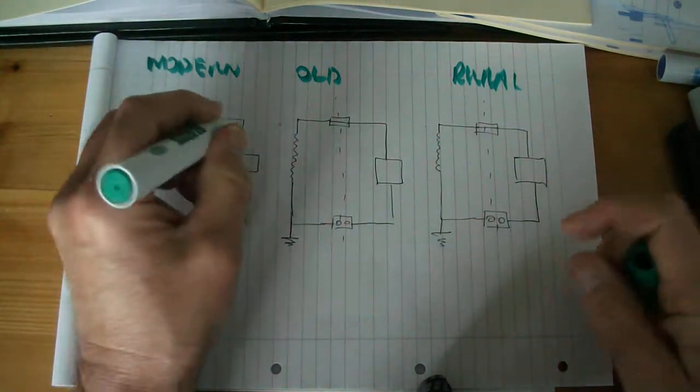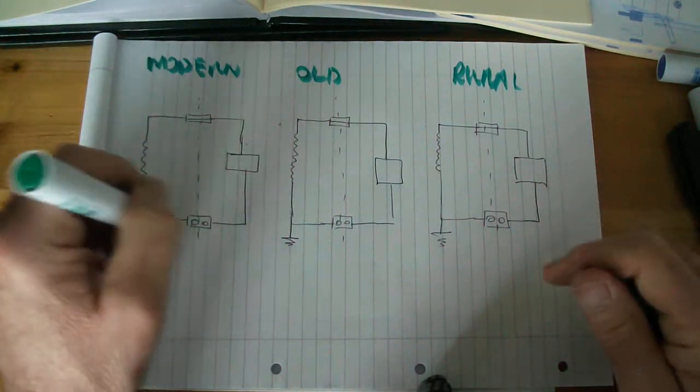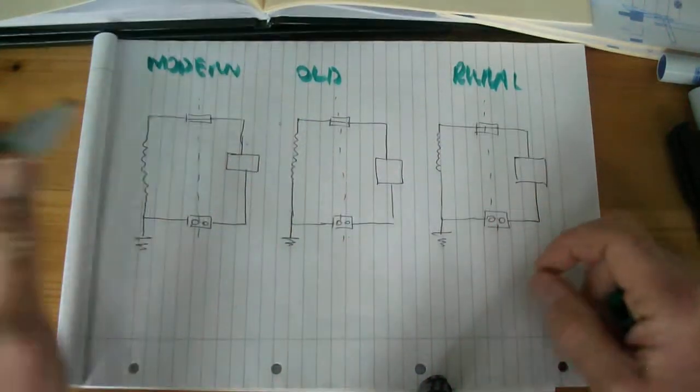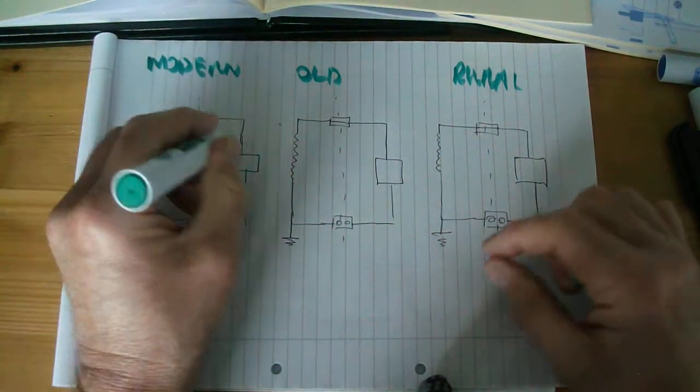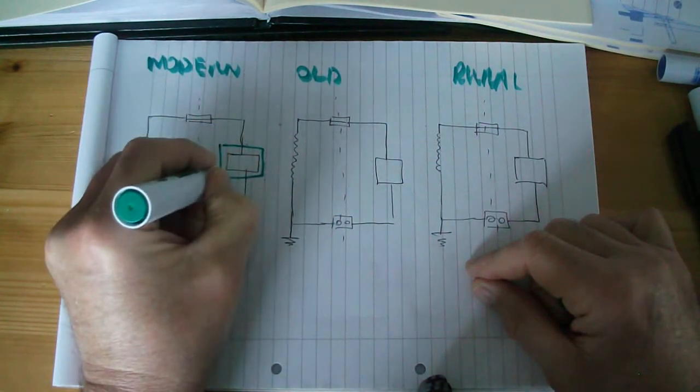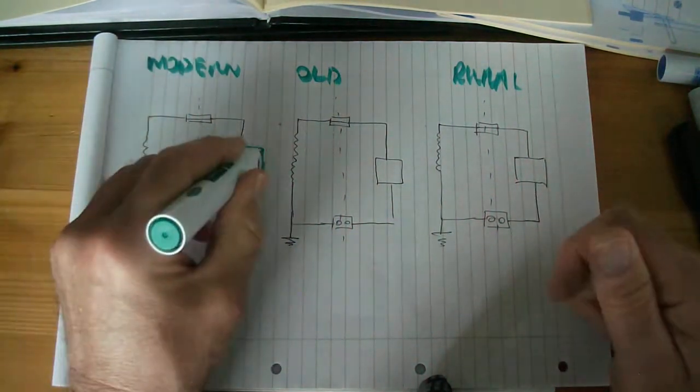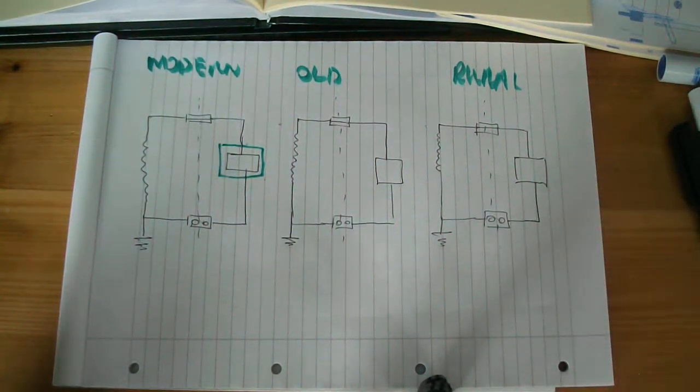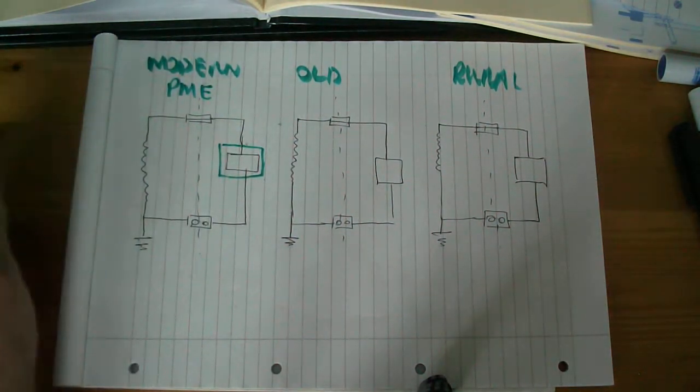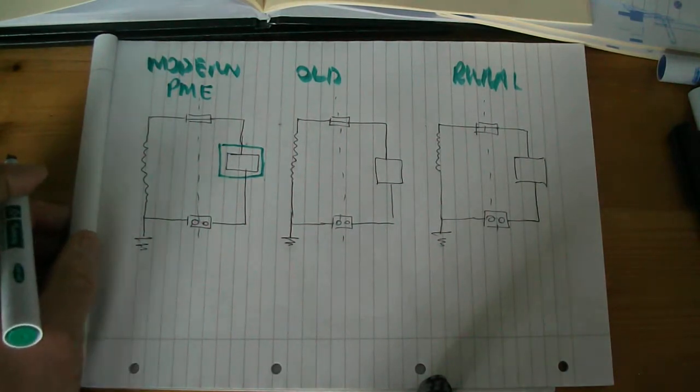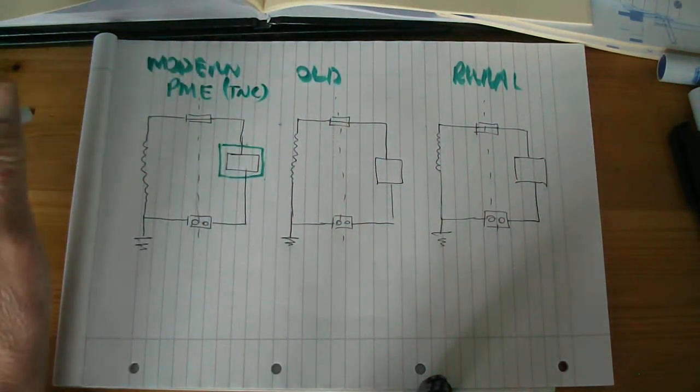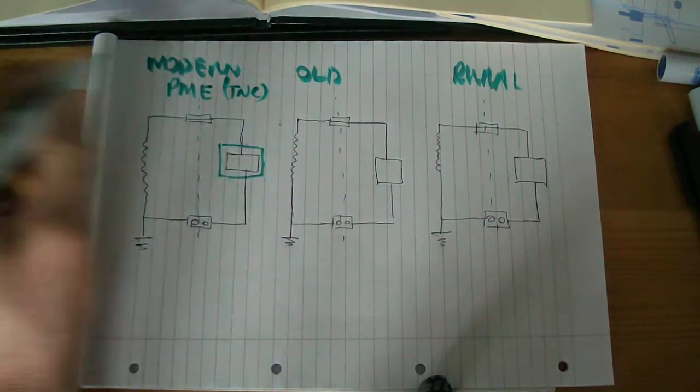And the most modern installations these days will have the earth connected directly to the neutral link. Now if you imagine these three circuits are effectively the same at the moment, and this one could represent someone's house. And if I just put this green boundary around it, that represents the earth connection in the house. In the what we call the PME system, Protective Multiple Earthing System. Or TNC, it is sometimes called TNC. But in your industry and in City and Guilds they call it PME. So you just need to remember that terminology.